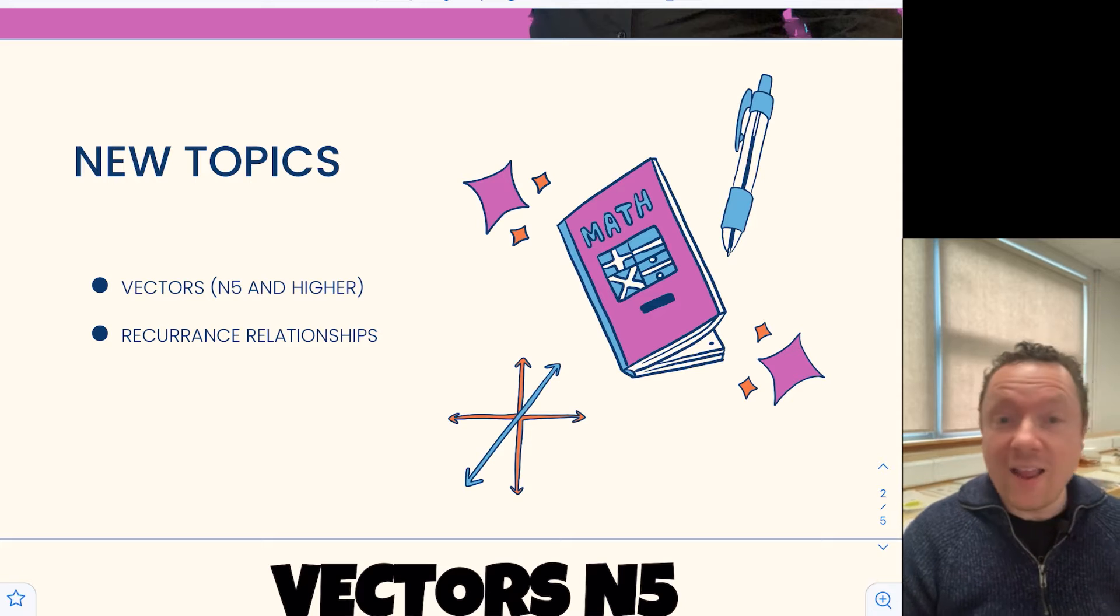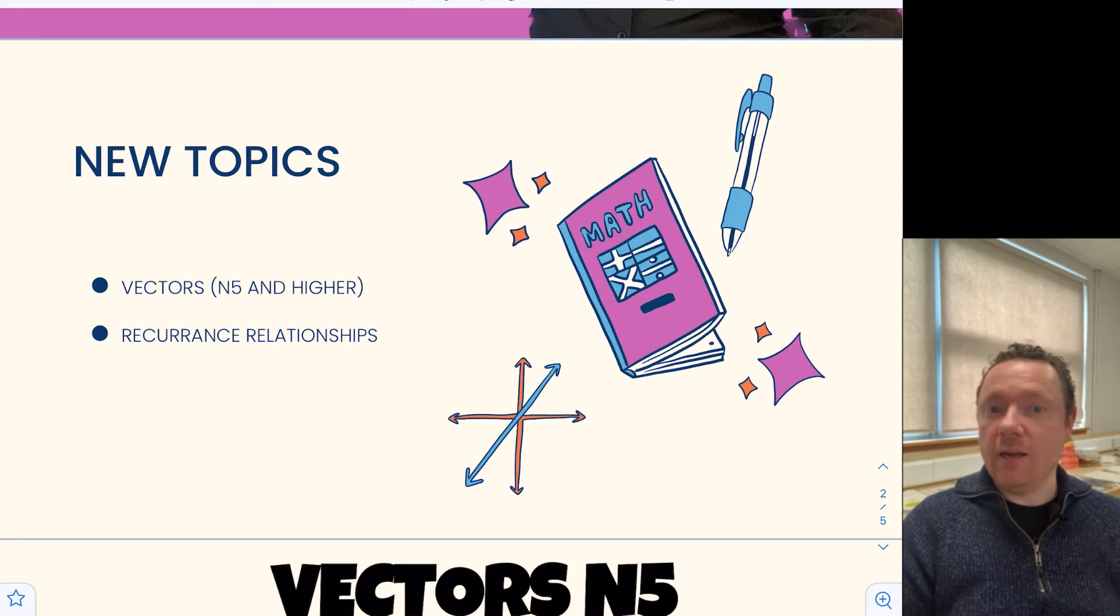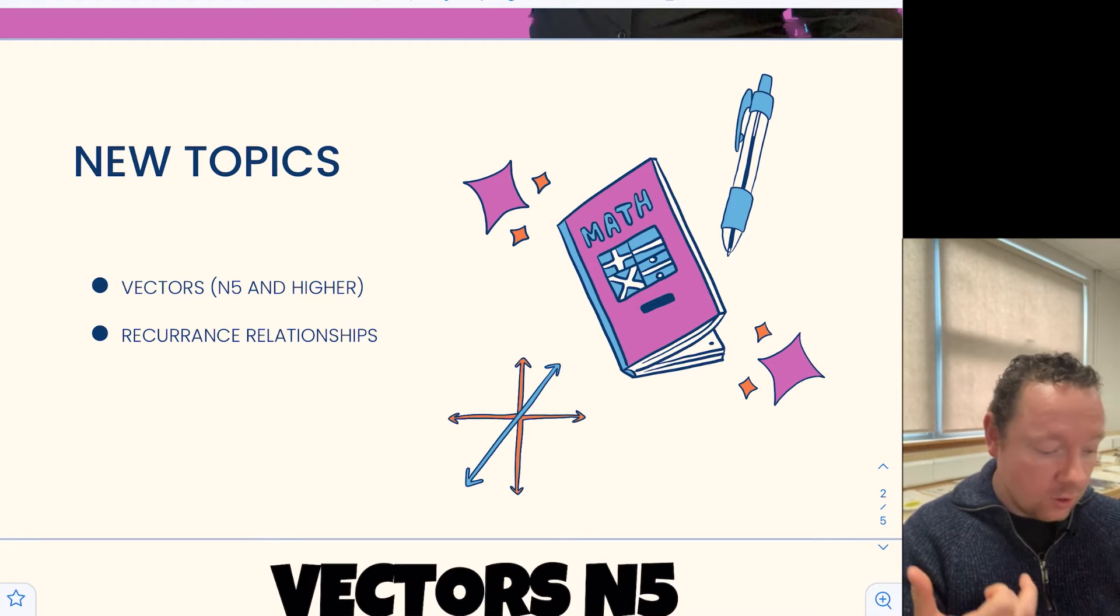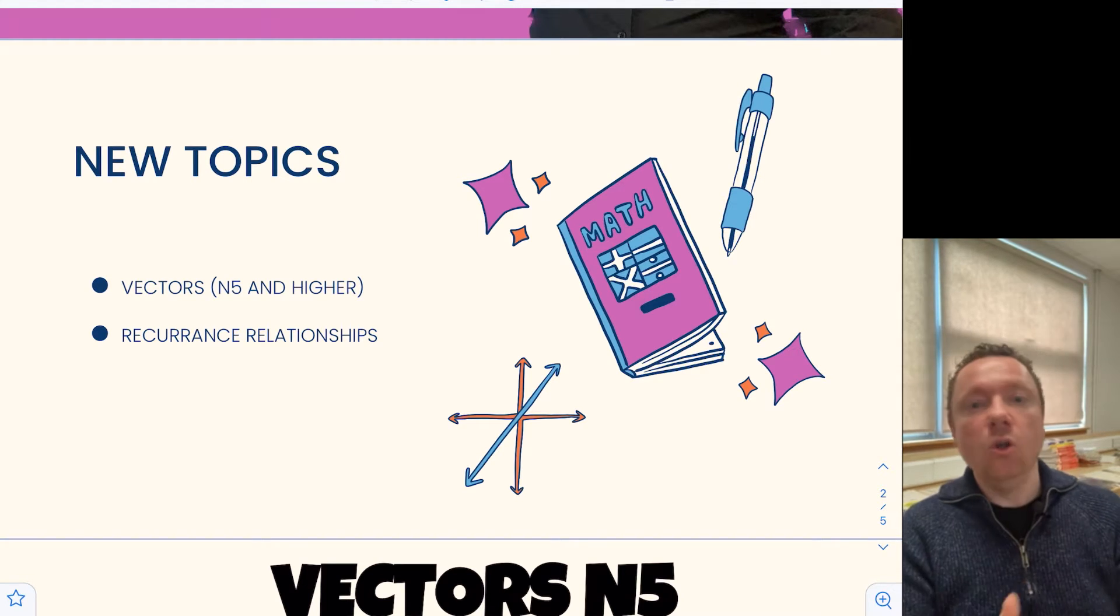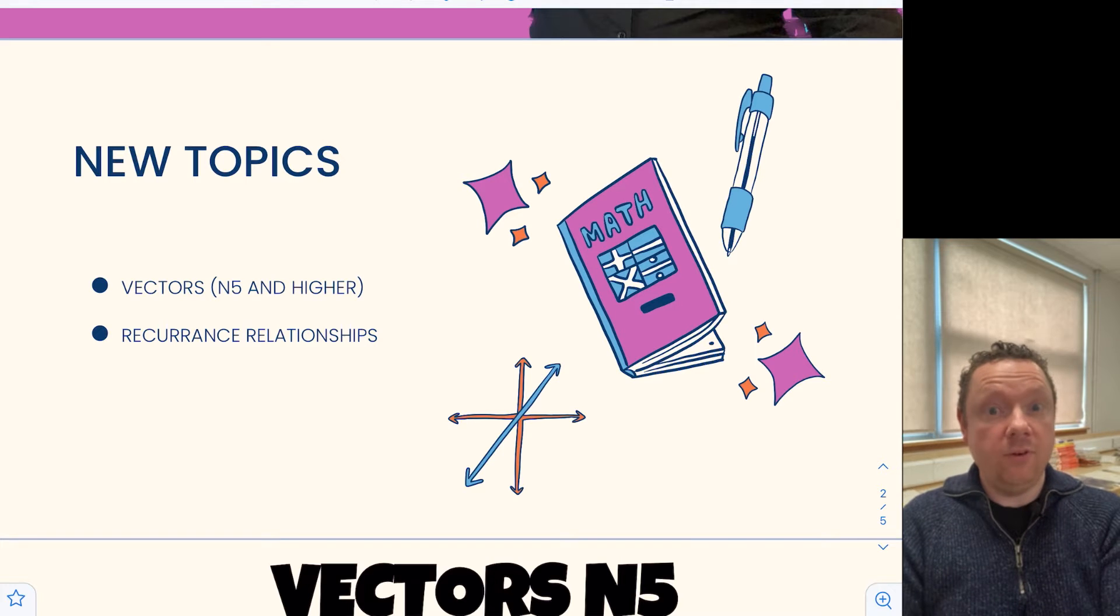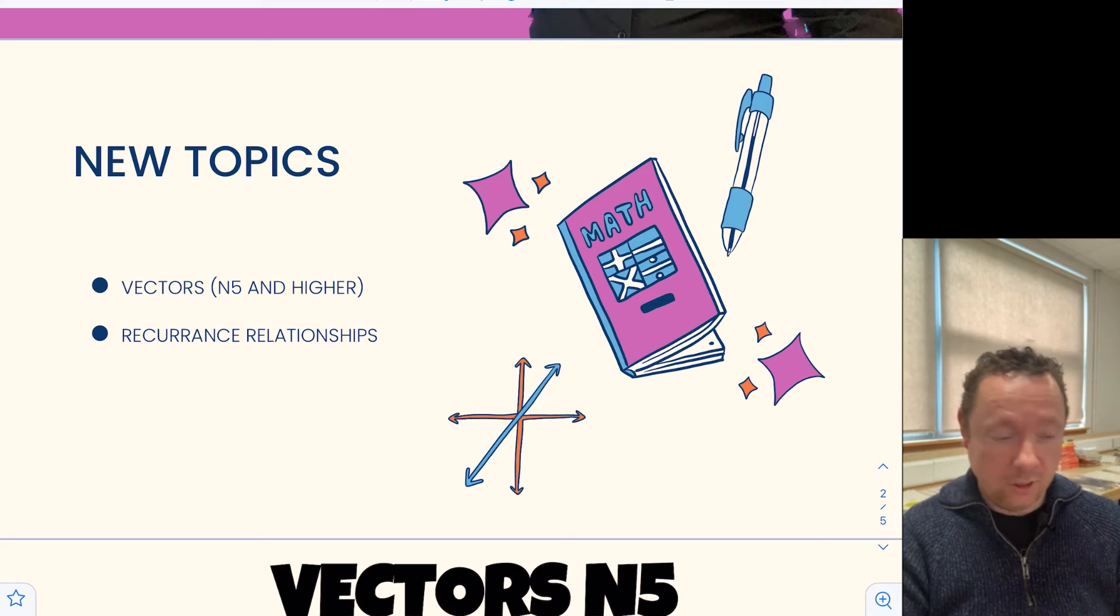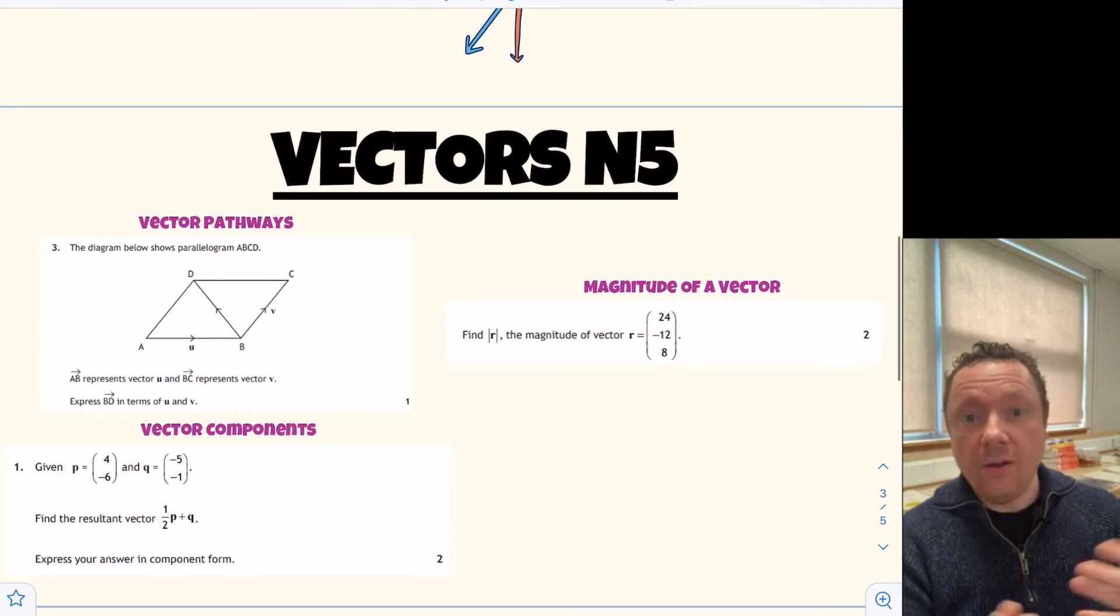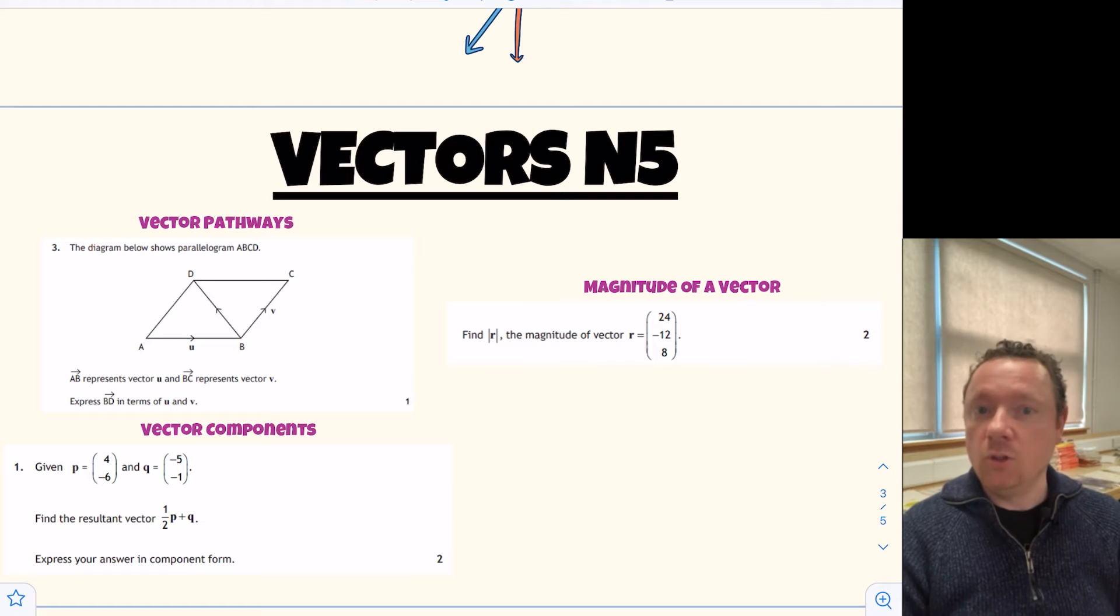The first one is vectors. Vectors is in the National 5 course as well which you've probably not seen because it wasn't in the exam. And also there's recurrence relations that's not in Nat 5 luckily so you can start fresh there but you need to remember some stuff about sequences. Let's go through vectors very quickly for Nat 5 to see a feel of what you need to brush up on. Hopefully your school will go through this with you but if they don't come back here and I'll get a good video for vectors at Nat 5 and for higher.